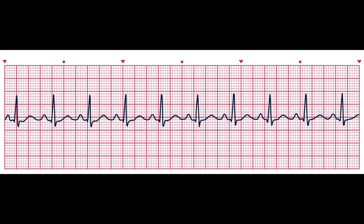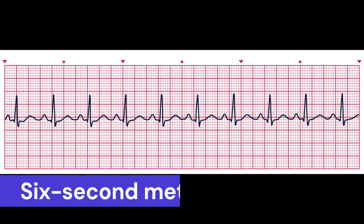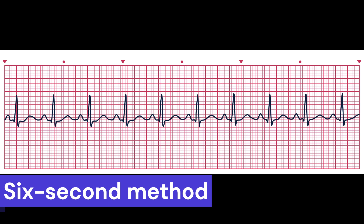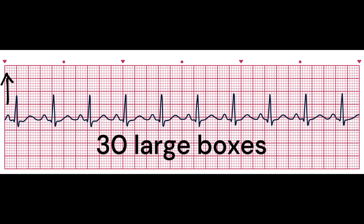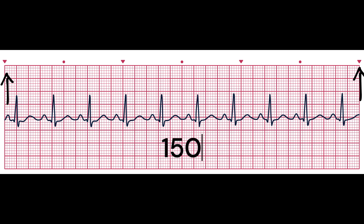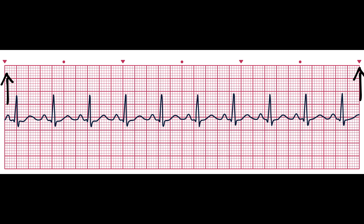The first method to determine the rate is called the six-second method. The first step is to choose a six-second interval on the EKG tracing. To determine the six-second interval, you need to count 30 large boxes or 150 small boxes on your EKG paper. These arrows point to the boundaries of six seconds on this EKG strip.